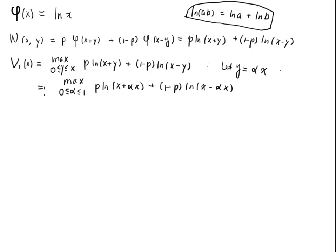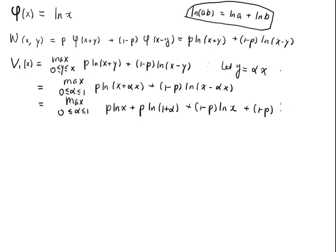Now we pull out x. With α between 0 and 1, we get p·log(x(1 + α)) plus (1 - p)·log(x(1 - α)). Expanding using the log property: p·log(x) + p·log(1 + α) + (1 - p)·log(x) + (1 - p)·log(1 - α). Since p + (1 - p) = 1, the log x terms combine to just log x.